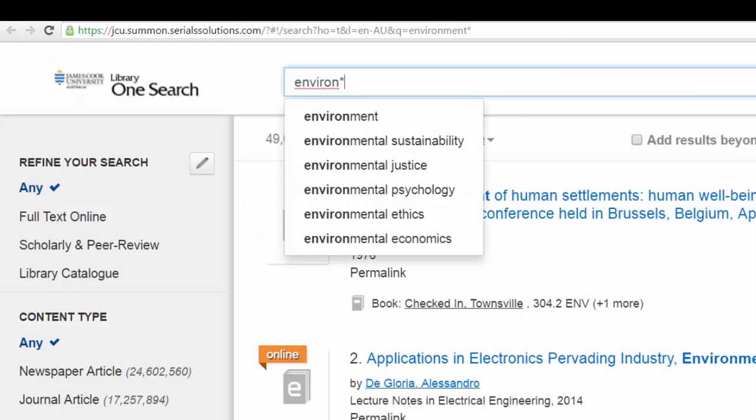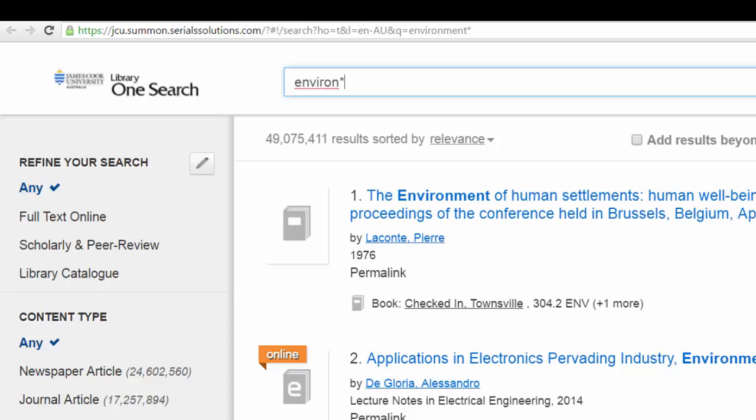To use this feature in OneSearch, we put an asterisk after the last letter, common to all the different variations of a word.